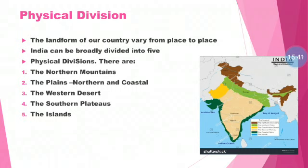Moving on to physical divisions, the landform of our country varies from place to place. We have five physical divisions: the Northern Mountains, the Plains, the Western Desert, the Coastal Plateaus, and the Islands. These are the five landforms found in India, which we will discuss in the next sessions.